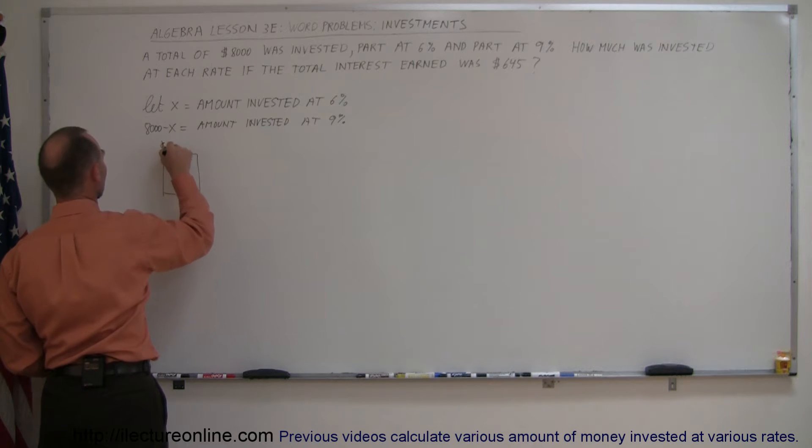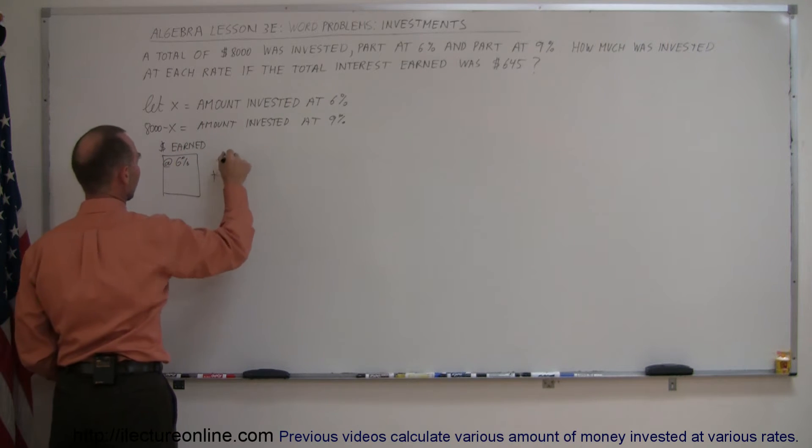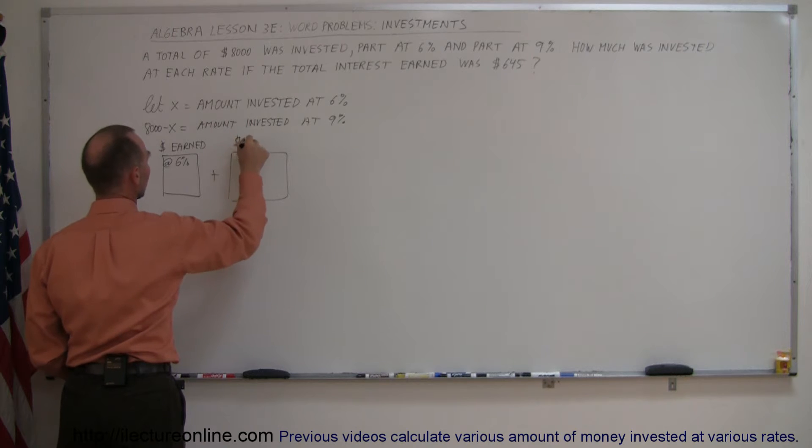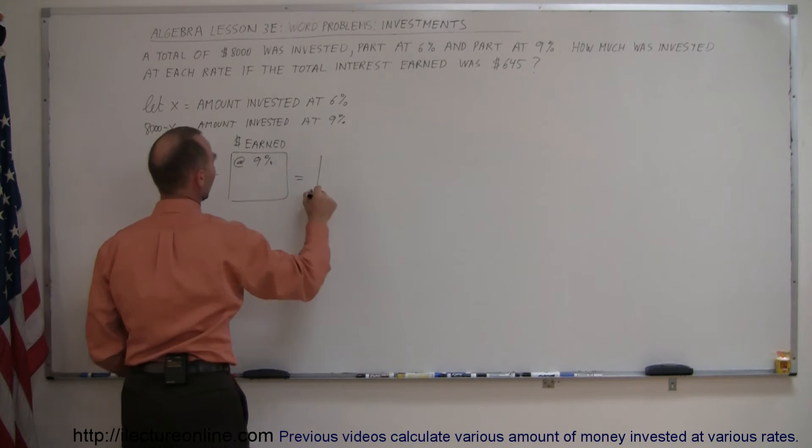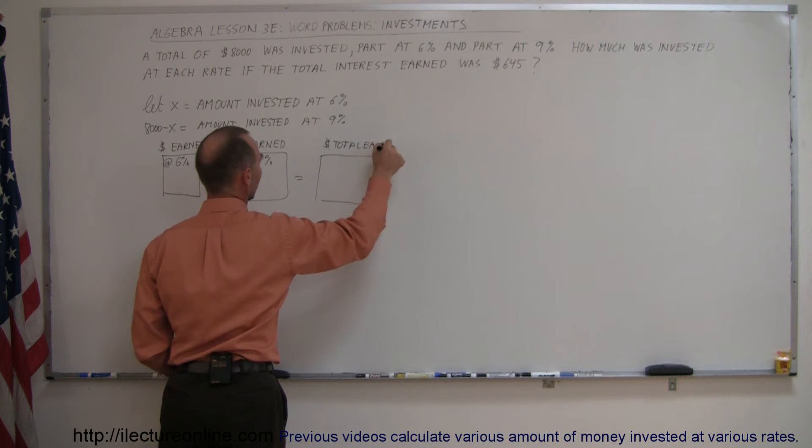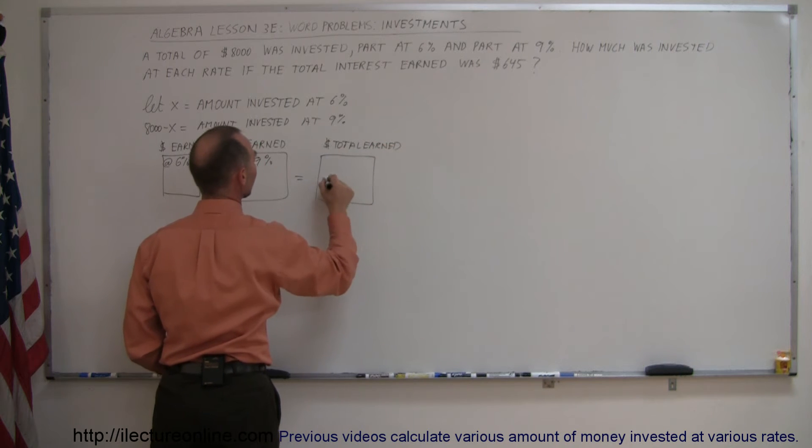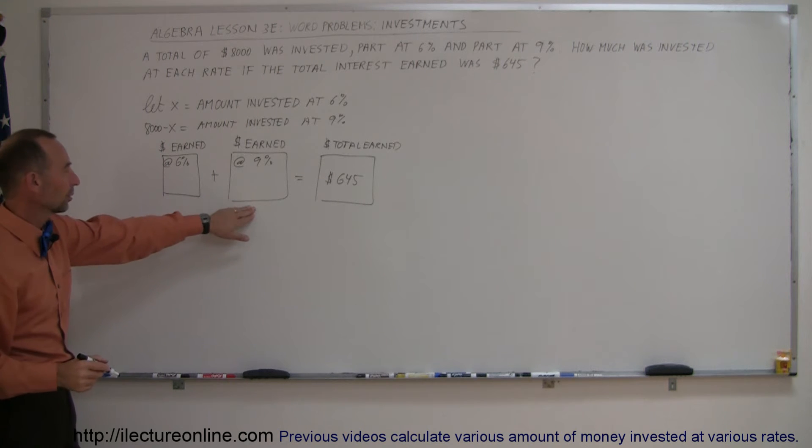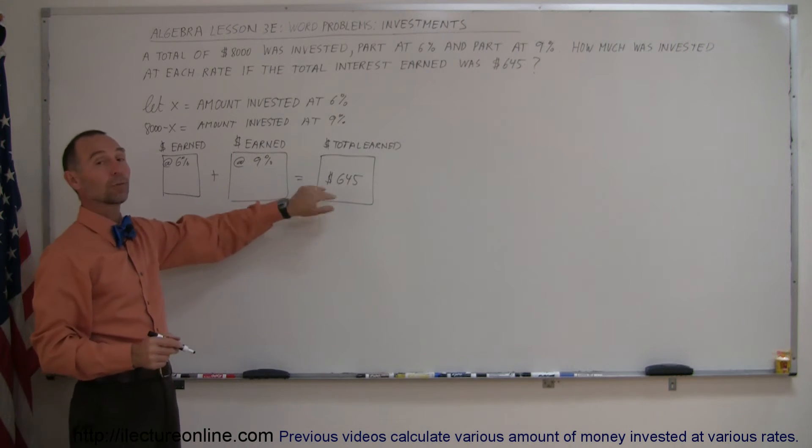So the dollars earned at 6% plus the dollars earned at 9% must equal the total dollars earned, the total earned, and we were told that was $645. So the amount of money earned at 6% plus the amount of money earned at 9% must equal the total amount of money earned.